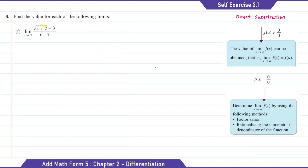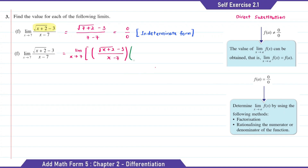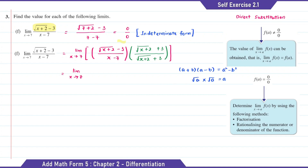Question F: here we're going to substitute x with 7 as x is approaching 7. The answer of this is 0 over 0. To find the limit value, we're going to rationalize the denominator. So the conjugate will be square root of x plus 2 plus 3.